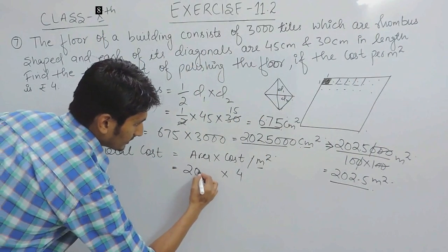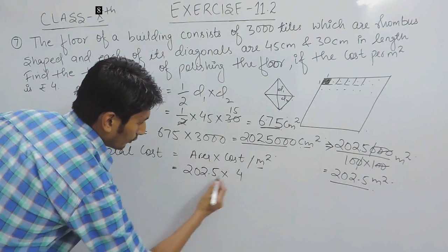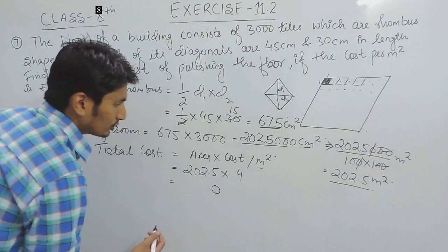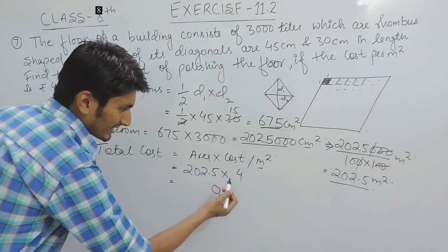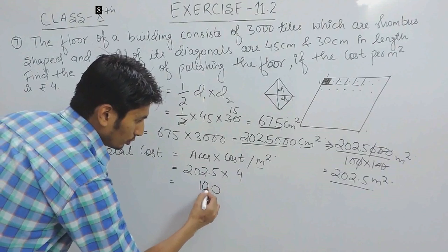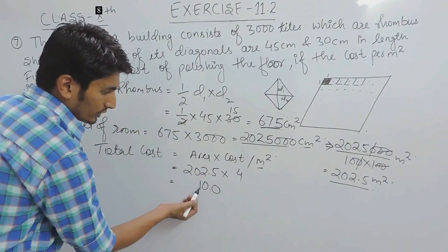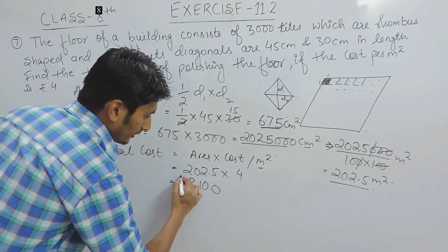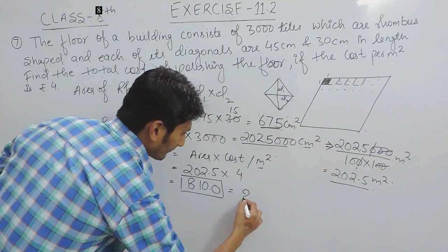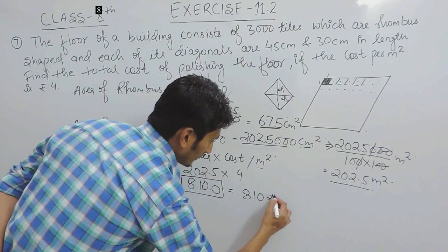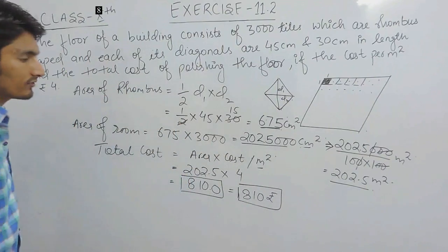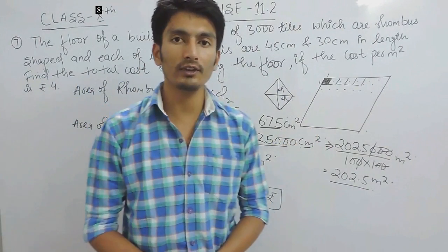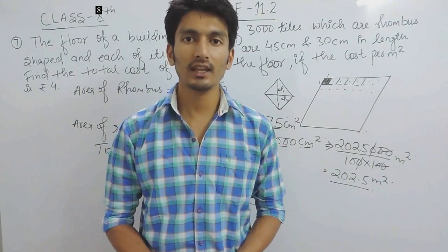Now if I multiply this with 4, I will get the total cost. So 4 into 5 is 20, carry 2, 4 into 2 is 8 and there was carry 2, so that would become 10, because 4 into 0 is 0 and 4, 2 is 8. So this will be the cost if I have to write in rupees. The total cost which we have to bear for polishing this whole floor will be 810 rupees. Thank you.